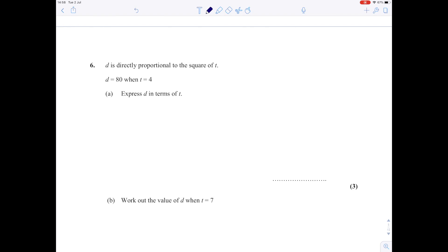The next question is direct proportion, but this time the second variable is squared. d is directly proportional to the square of t, which we write as d is proportional to t squared. Write that as an equation: d equals k times t squared. The corresponding pair of values is d is 80 when t equals 4. Substitute those values: 80 is k times 4 squared, and 4 squared is 16, so k is 80 over 16 which is 5.